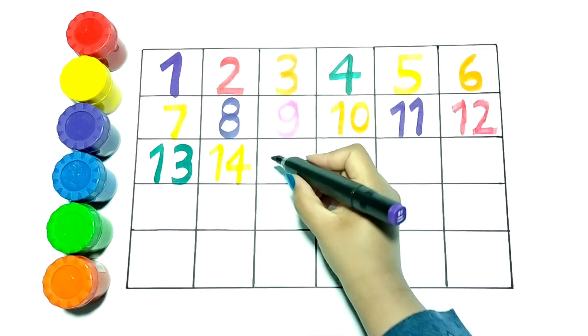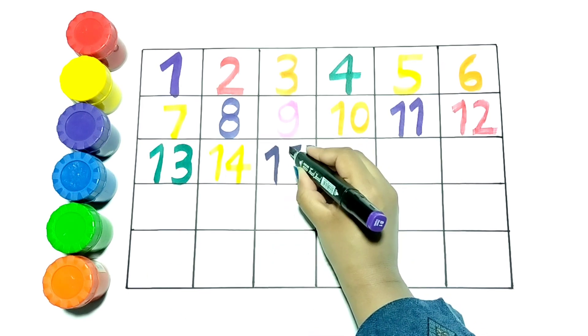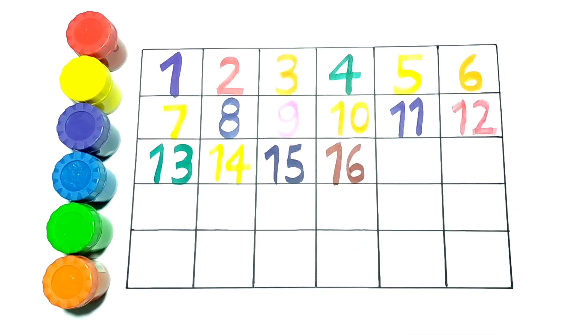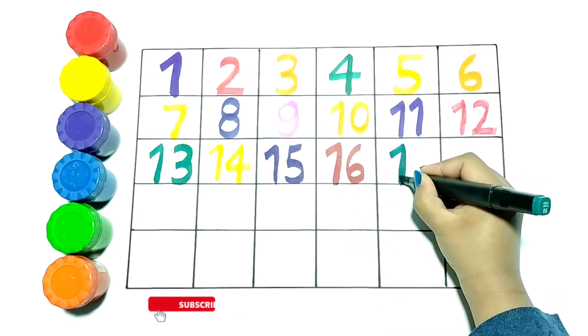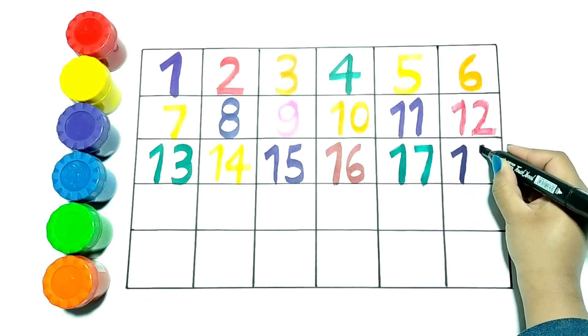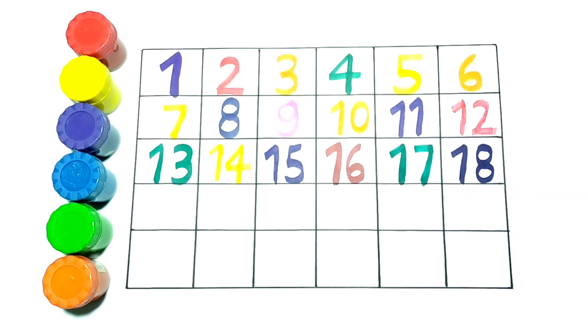Now I am writing 16 with red color. Next number is 17. It is green in color. Now let's write 18 with purple color.